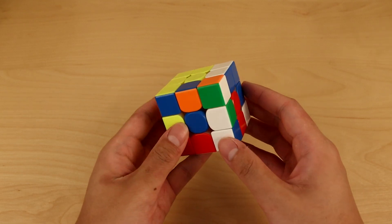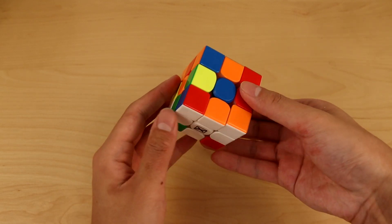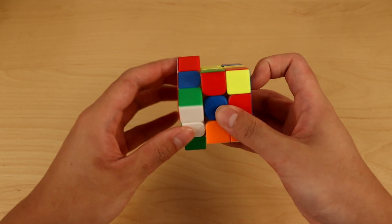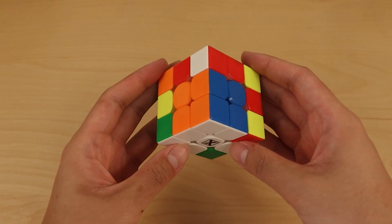The most obvious way to do this is right after we make the cross, instead of aligning the cross like this, we can first insert this edge piece here, then solve the cross. Now we have a white X-cross.